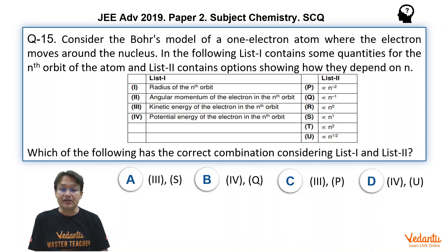The first quantity is radius of the nth orbit. Second is angular momentum of the electron in the nth orbit. Third is kinetic energy of the electron in the nth orbit and fourth is potential energy of the electron in the nth orbit.